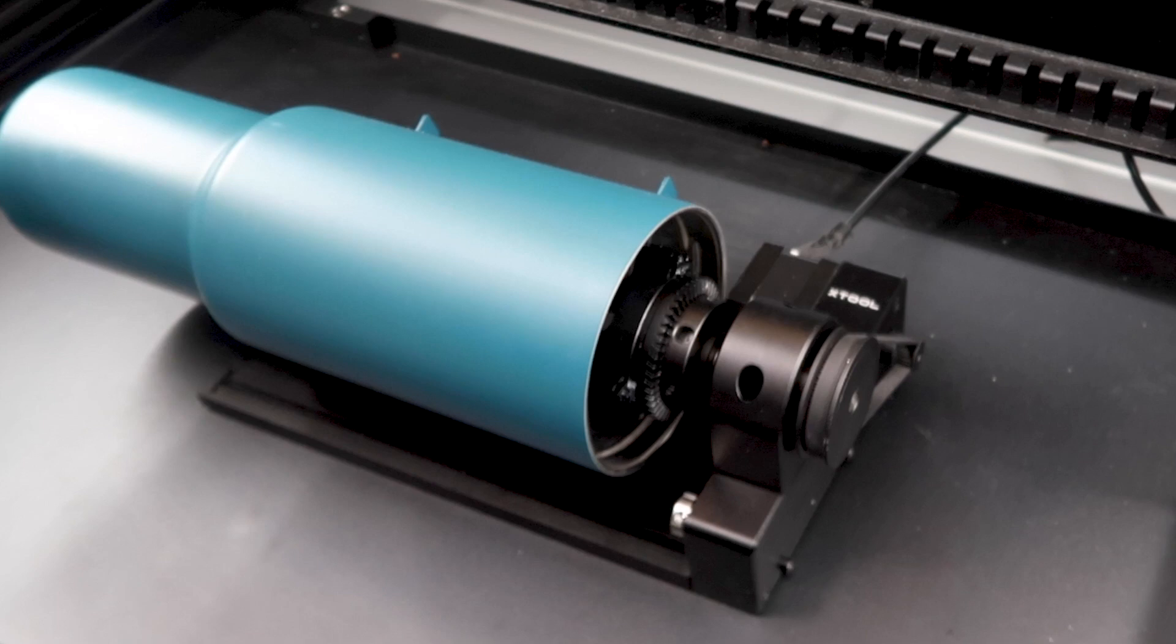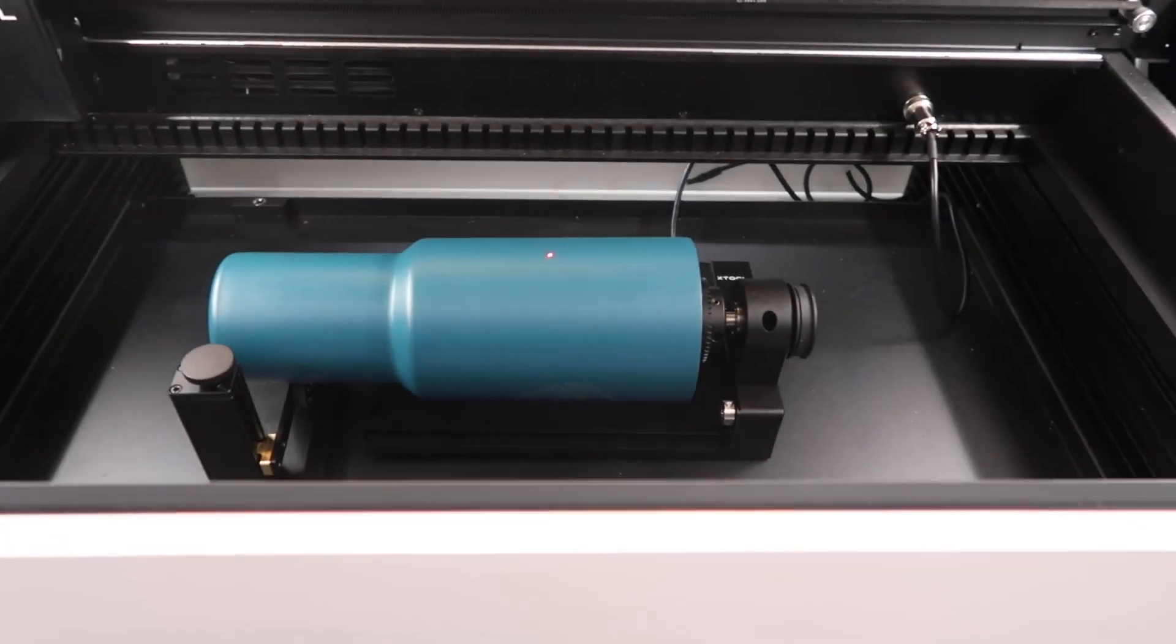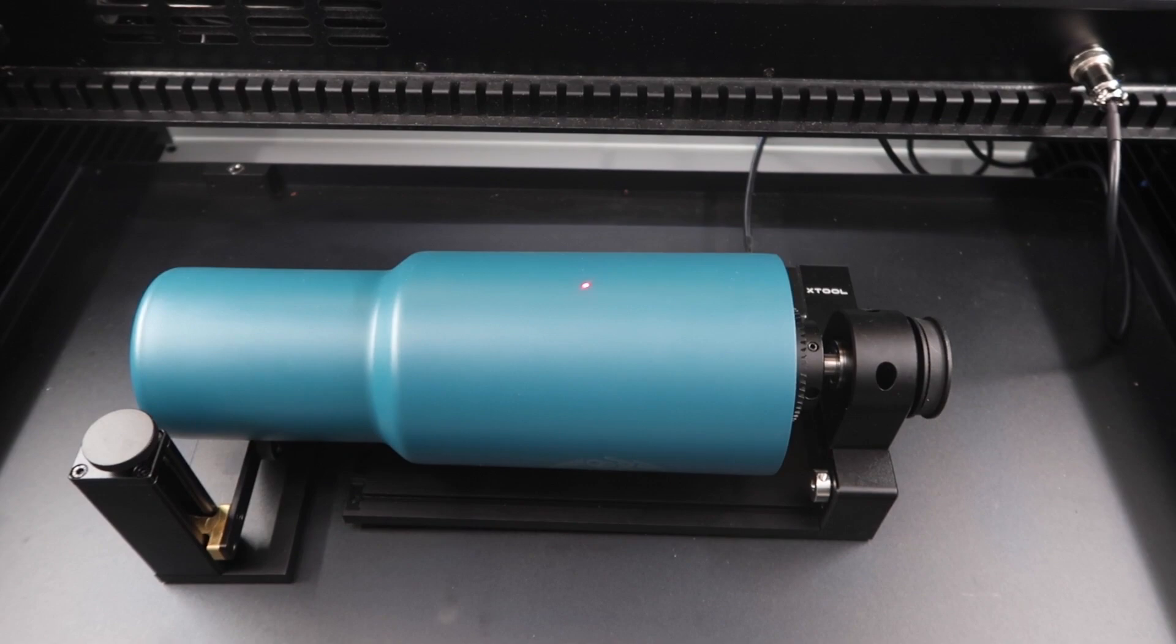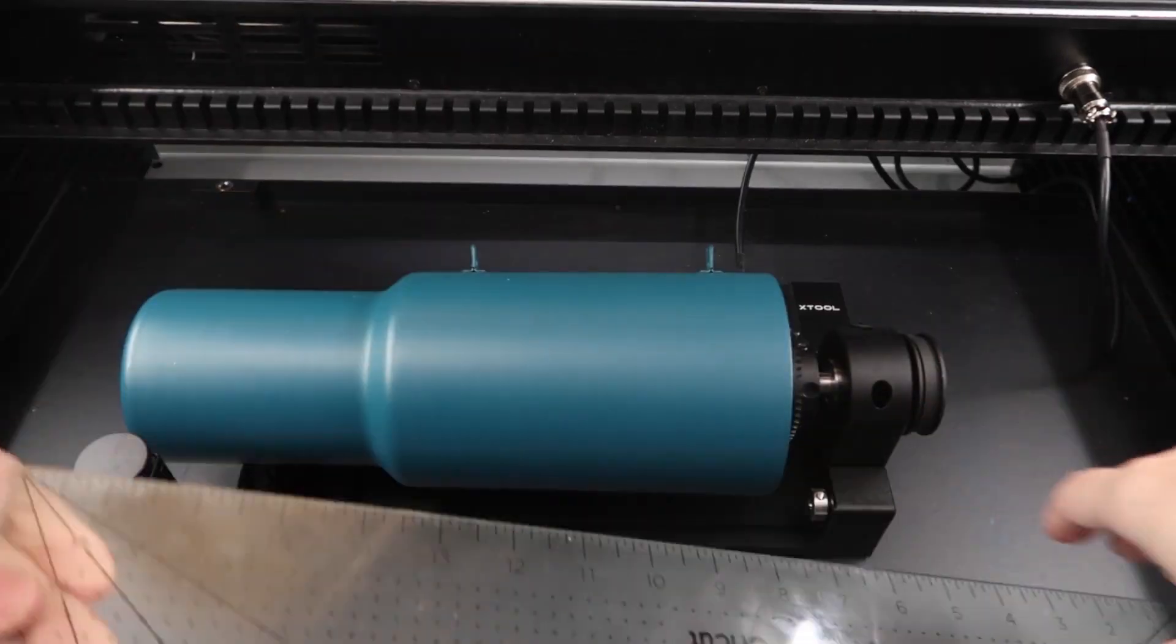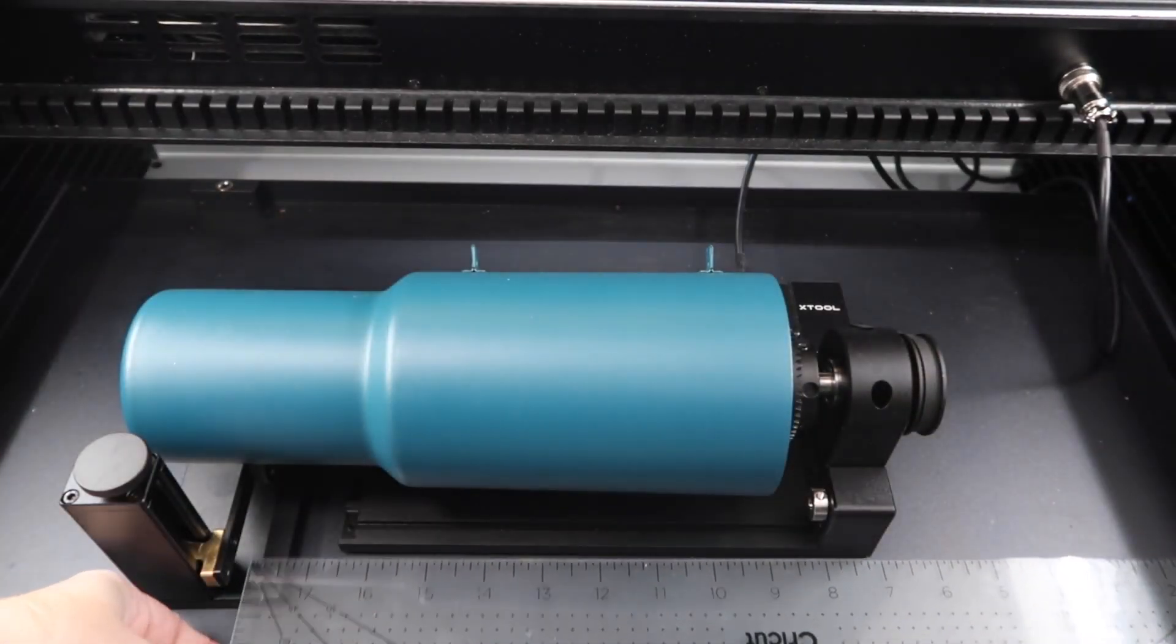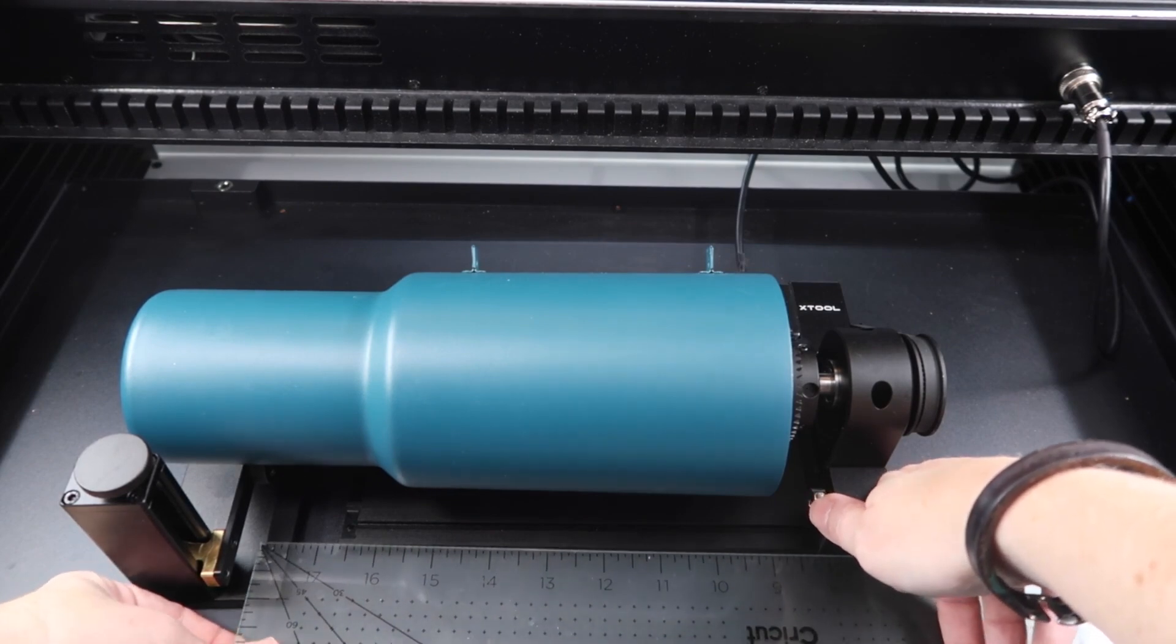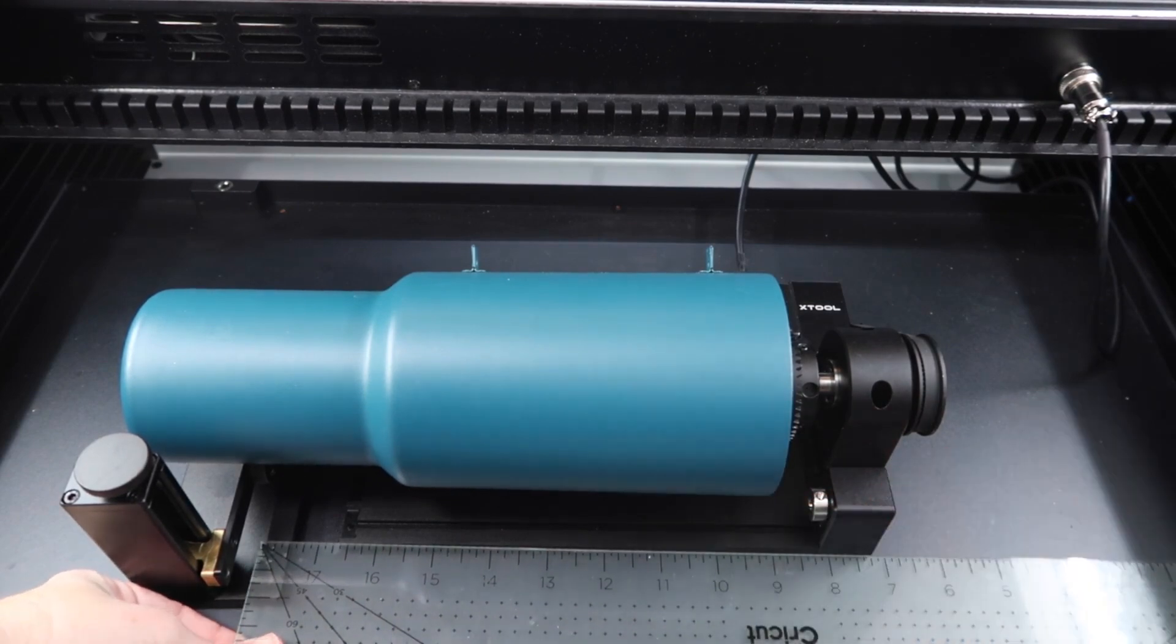Now we need to make sure that the laser dot is on the highest point of the tumbler. You may need to close the lid and open it back up to see the laser. Adjust your rotary and tumbler until this laser is at its highest point, just like this. Once it's in the right spot, I'm going to use my Cricut ruler to make sure that the rotary is square inside the machine. This will help ensure that the design doesn't end up crooked.